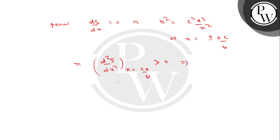This will come out positive, so at this point we'll get, this implies minimum value of s is equal to b square times ca upon b plus c square times a square upon ca upon b, finally we get abc plus abc, that is 2abc.